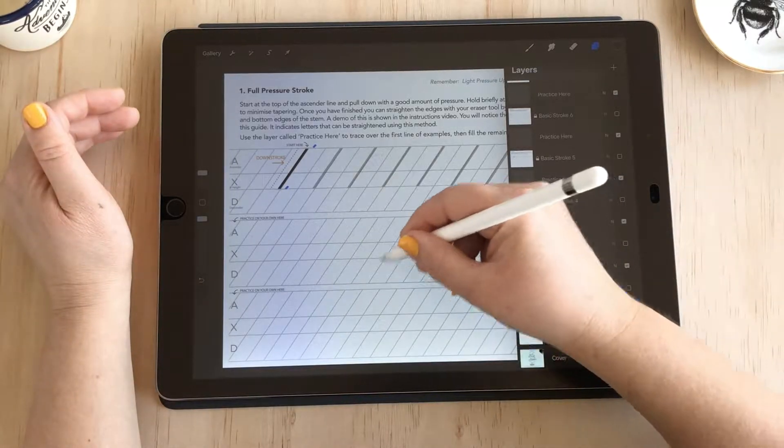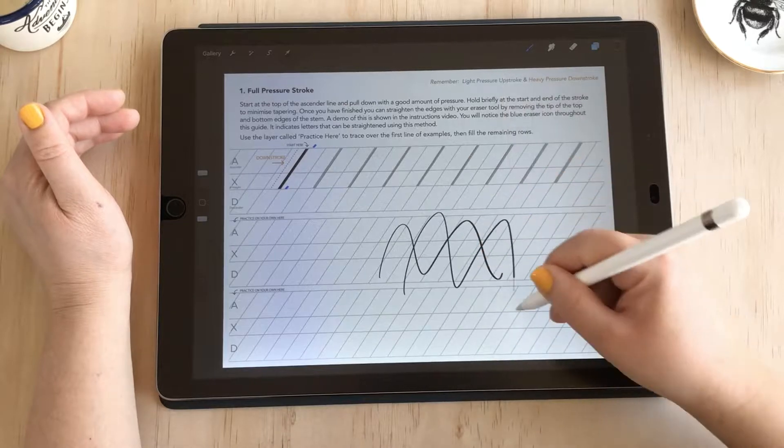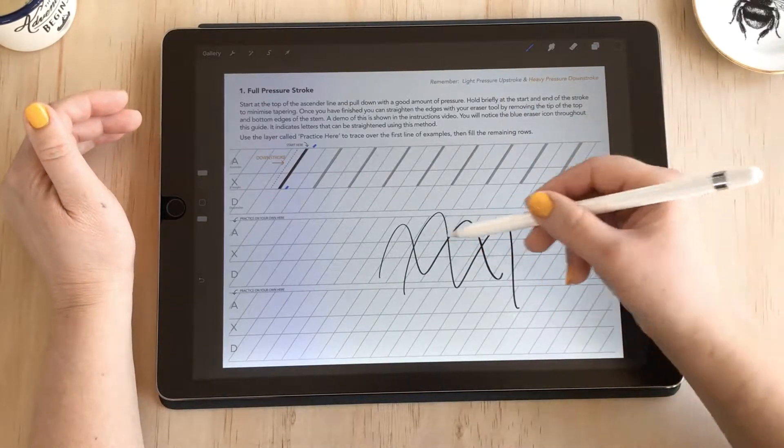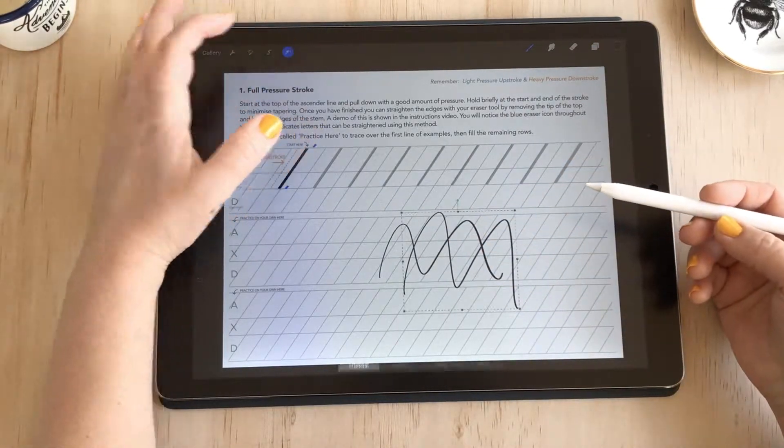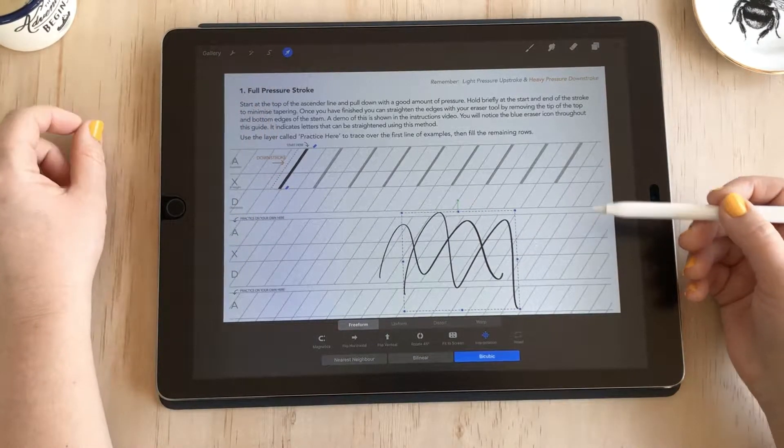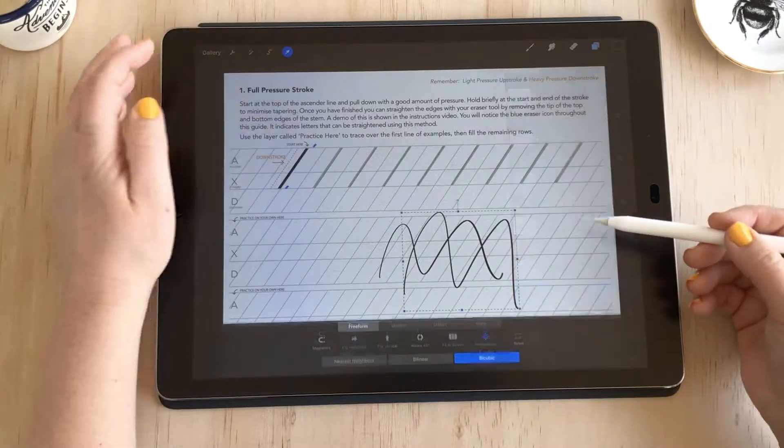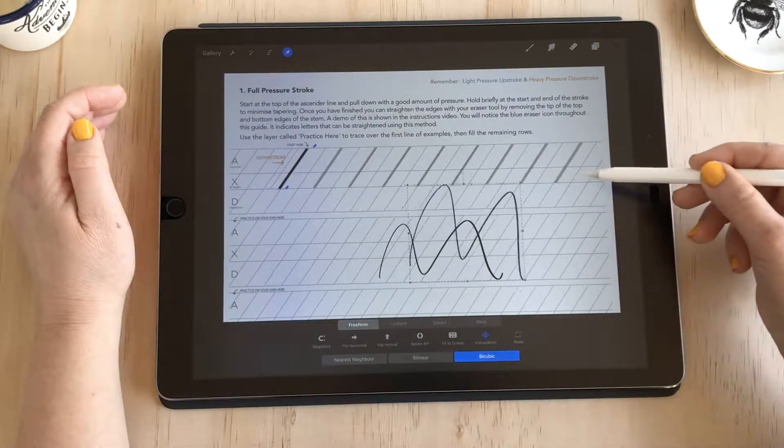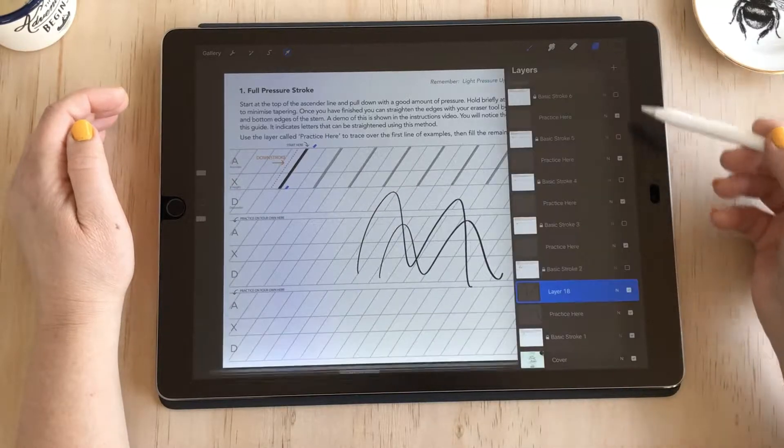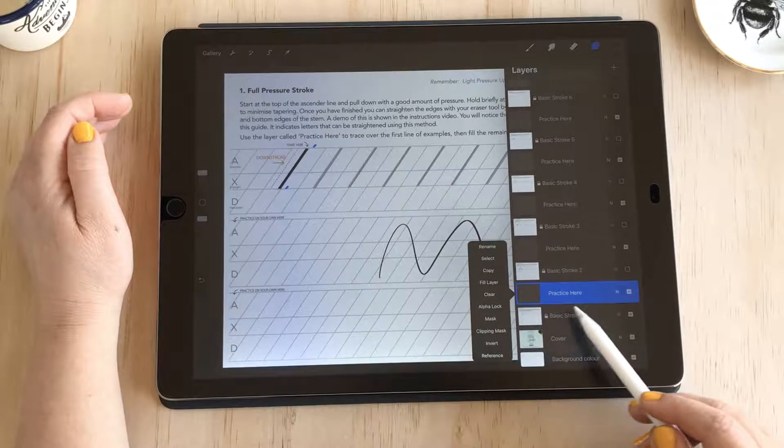If I draw a squiggle on this one layer and then create another layer and draw another one on top, these are independent from each other even though they're overlapping. If I select my move tool, which is this arrow in the top navigation—I'm on layer 18, the one I just created—I can now move that independently to the layer underneath. So that's what we mean when we talk about layers.